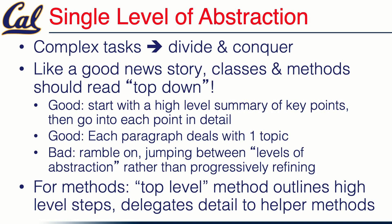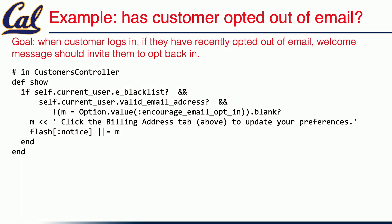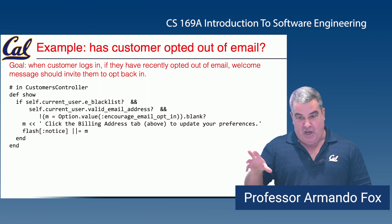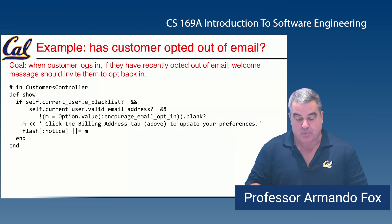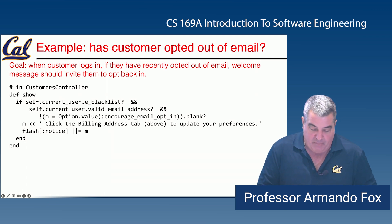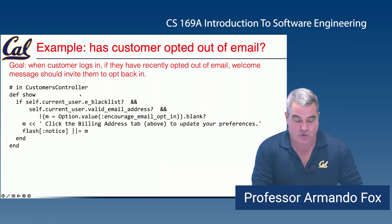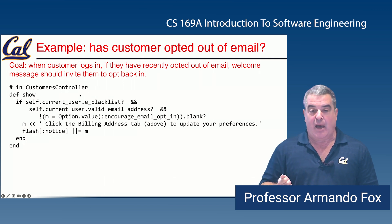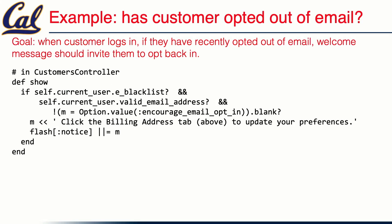This is a refactoring I did a few years ago. Here's an app where customers can opt in or opt out of an email list. If somebody has recently opted out, the next time they come to the app you'd like to give them a polite nudge asking if they want to opt back in. That's the problem this code is trying to solve. The original code is the action in the customers controller called as soon as a successful login happens. Don't worry about trying to parse the code, but here's what to observe at a high level.